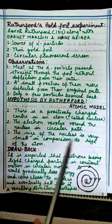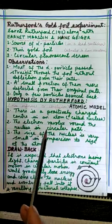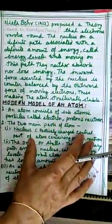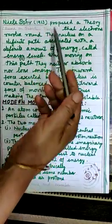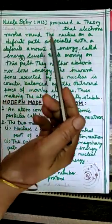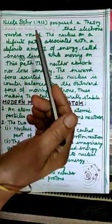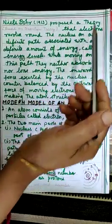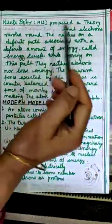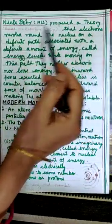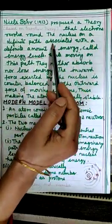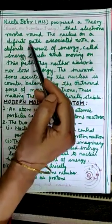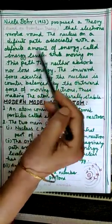It was not incorrect but needed slight modification. It was Niels Bohr in 1913, just two years after Rutherford gave his famous atomic model, who proposed a theory after studying quantum theory.